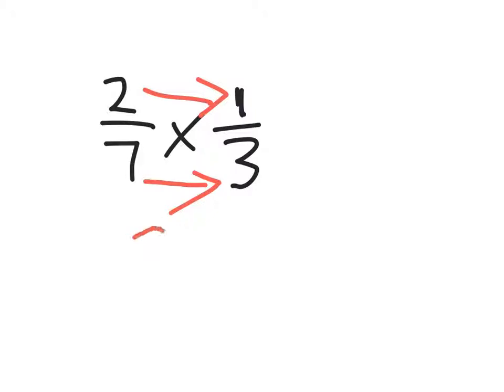So 2 times 1 equals 2 out of 7 times 3 equals 21. So the answer is 2 out of 21. So we cannot simplify and this is the answer.